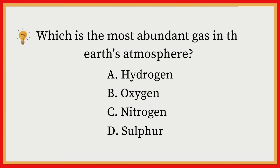Which is the most abundant gas in the Earth's atmosphere? A) Hydrogen, B) Oxygen, C) Nitrogen, D) Sulfur. Answer: C, Nitrogen.